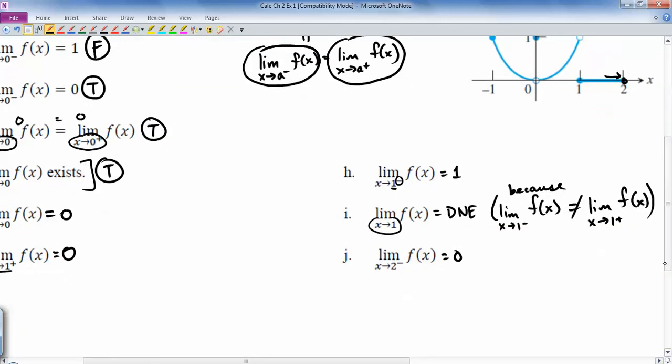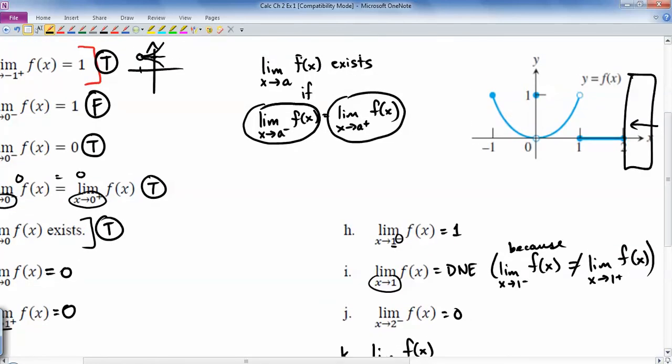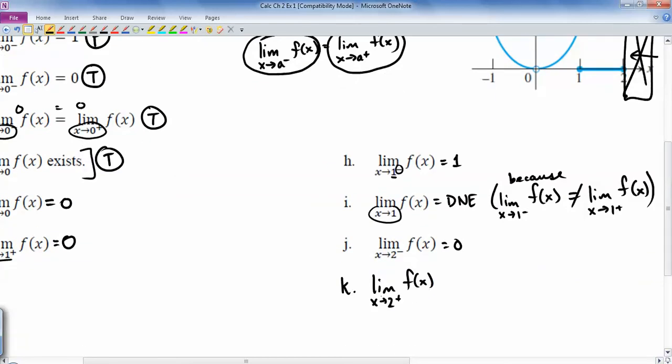Okay. I'm going to add one extra one in here. Let's say k, limit as x goes to 2 from the right side of f of x. If you look at that, that's saying, what's the function's y values the closer you get to 2 from the positive side of 2? Well, the function doesn't even exist over here. So since there's no function here, that means that there's no way that the y values can approach anything from the right side of 2. So this would be a does not exist.